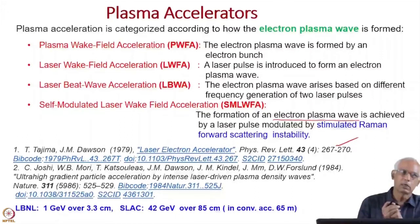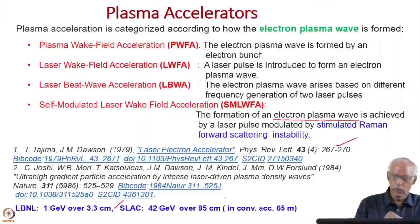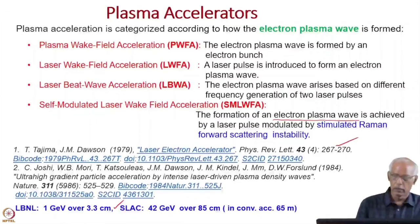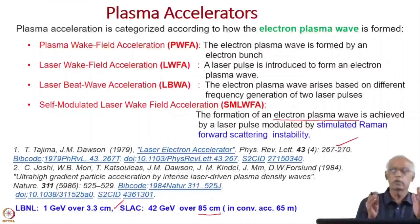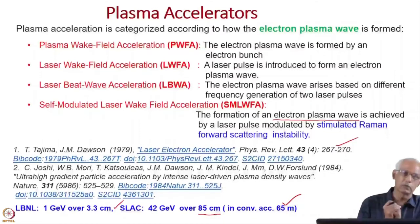Similarly, SLAC — the Stanford Linear Accelerator Center — injected 40 GeV electrons into a laser plasma accelerator and accelerated them to 82 GeV, adding 42 GeV of energy to the electrons over a length of only about 85 centimeters. If this energy had to be achieved in SLAC itself, it would correspond to about 65 meters — almost a thousand times reduction in length.